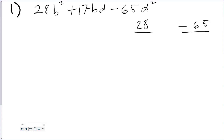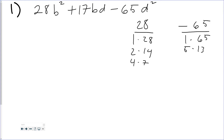For 28, my factors are going to be 1 and 28, 2 and 14, 4 and 7. For negative 65, it's going to be 1 and 65, 5 and 13, where one of these has to be negative. I'm going to start picking pairs and see which one, when I cross multiply them, will combine to give me a positive 17. The one that works is 4 and 7, and 5 and 13.